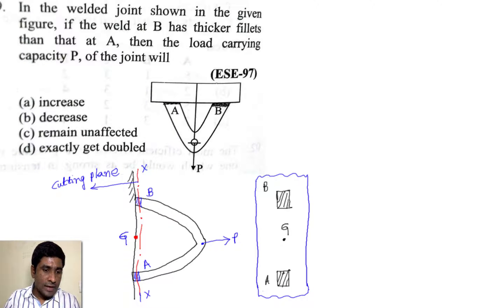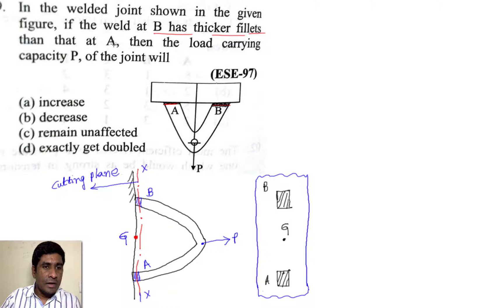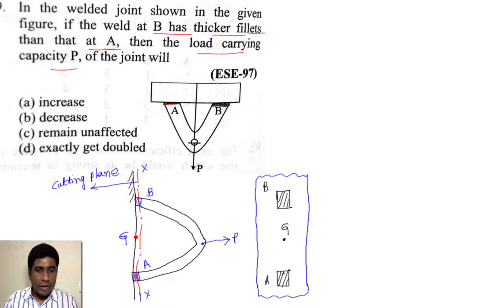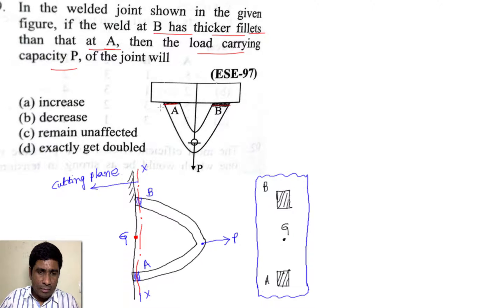This plate is attached through a weld joint at points A and B. If the weld at B has a thicker fillet than at A, what is the load carrying capacity P of this joint? The load carrying capacity can be calculated only by knowing the resisting stresses at point A and at point B.